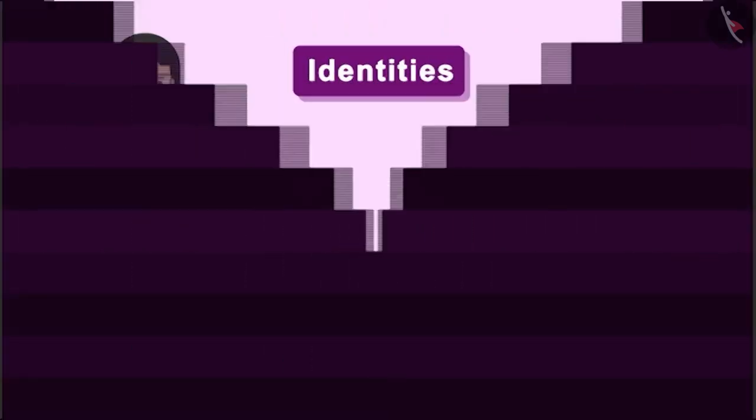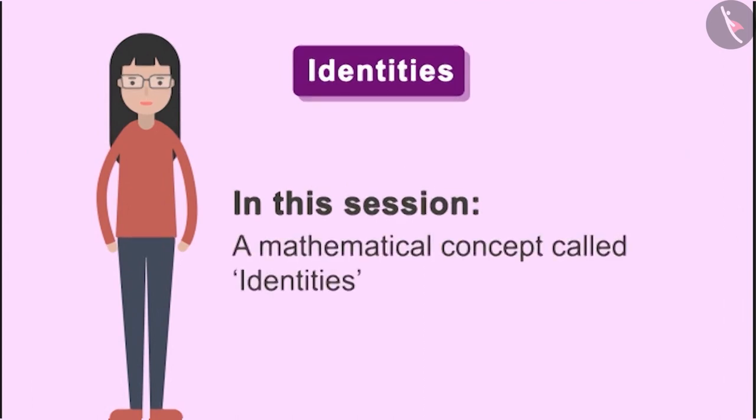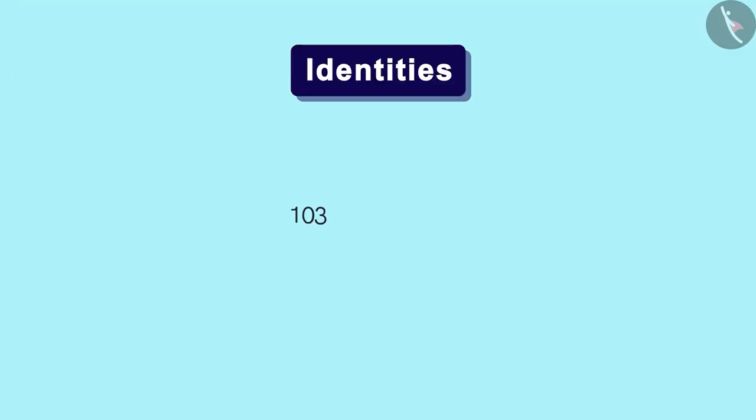So friends, in order to do this, let us learn about a mathematical concept called identities in this session. Let us first write 103 as the sum of two simple numbers like 100 and 3. That means the square of 103 will be equal to the square of 100 plus 3.